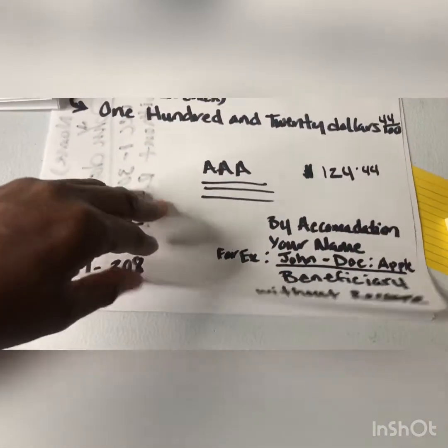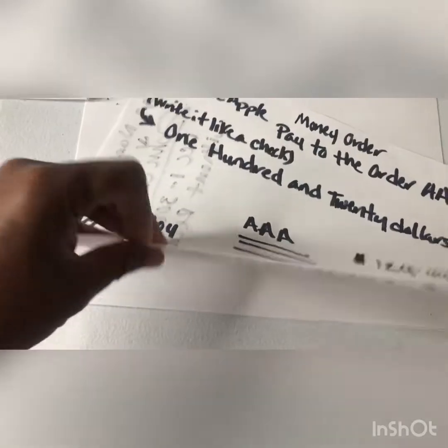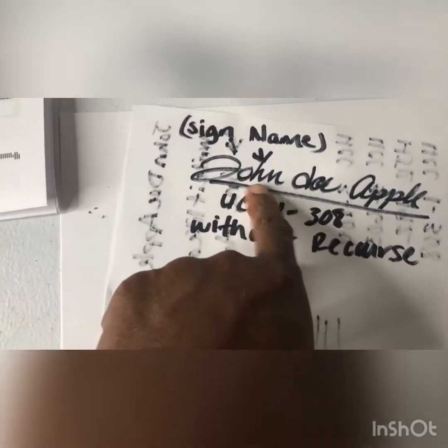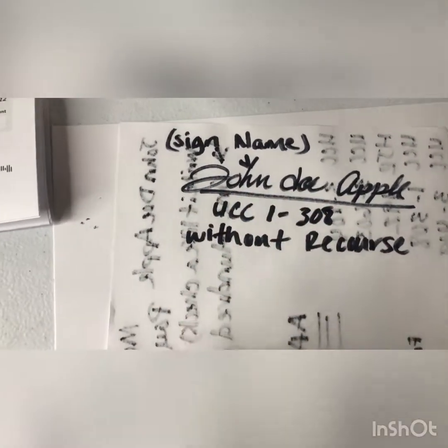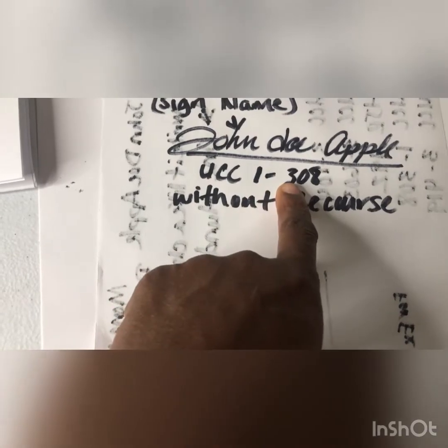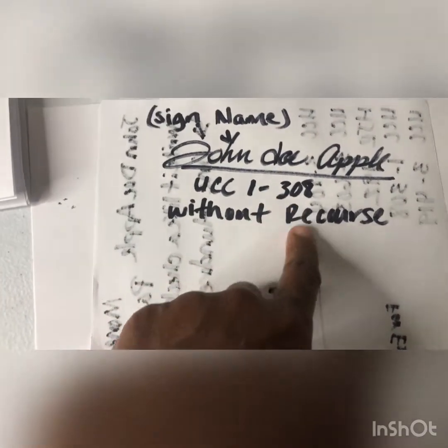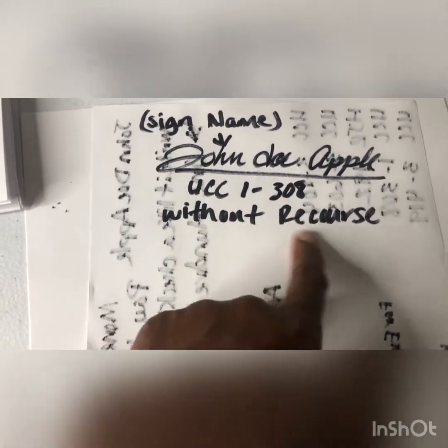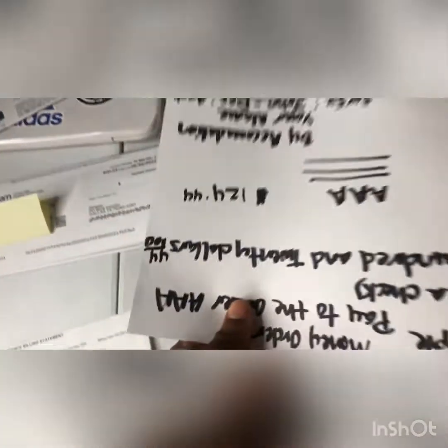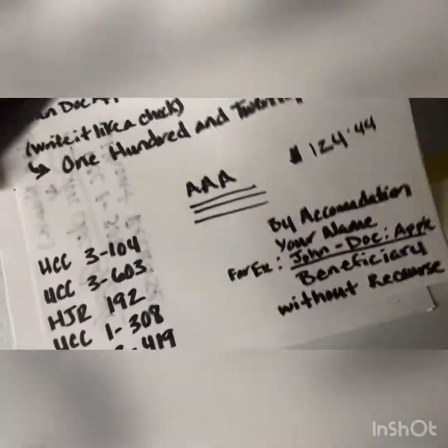Okay, that's what you want to write right here on the bottom of your bill. Then you want to flip the bill over once you detach it. You also want to sign your name like you did on the front, and put UCC 1-308 without recourse. That way they don't enter you into any contract.